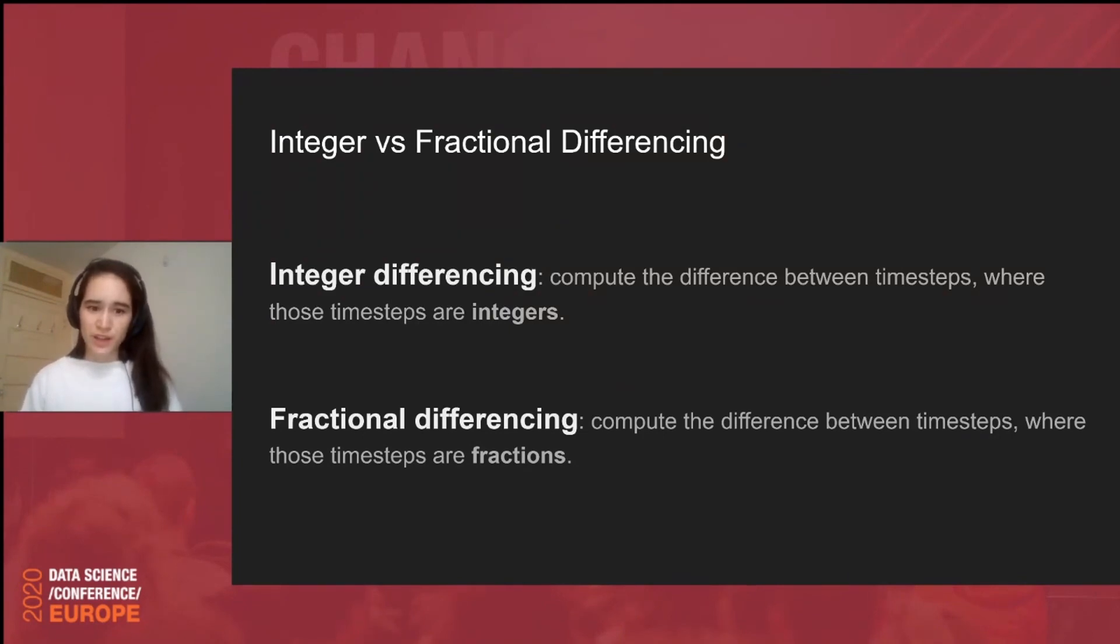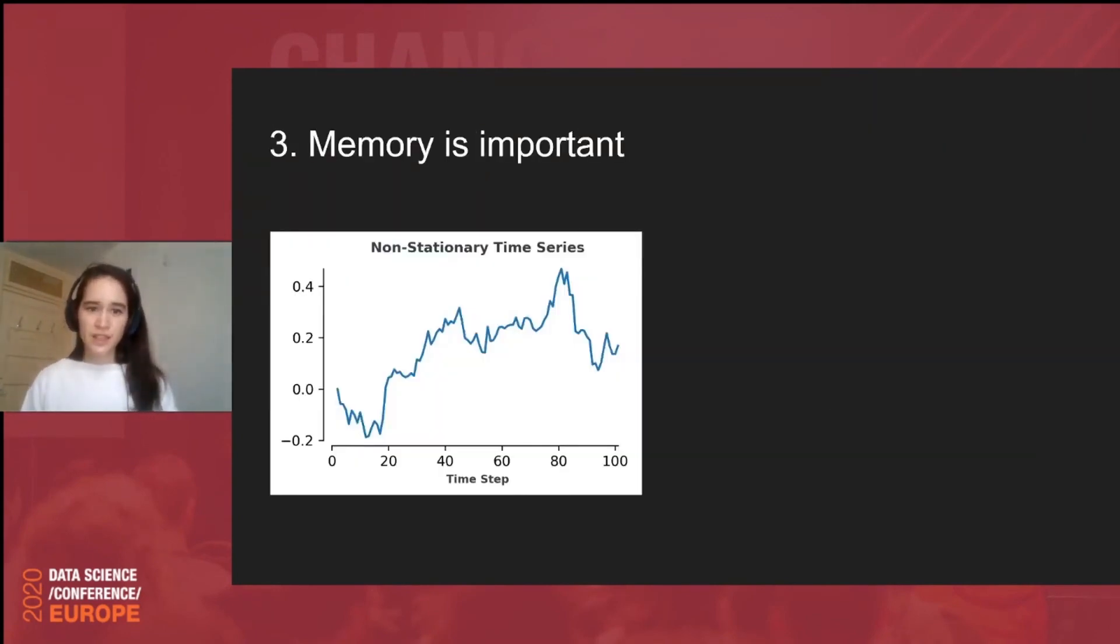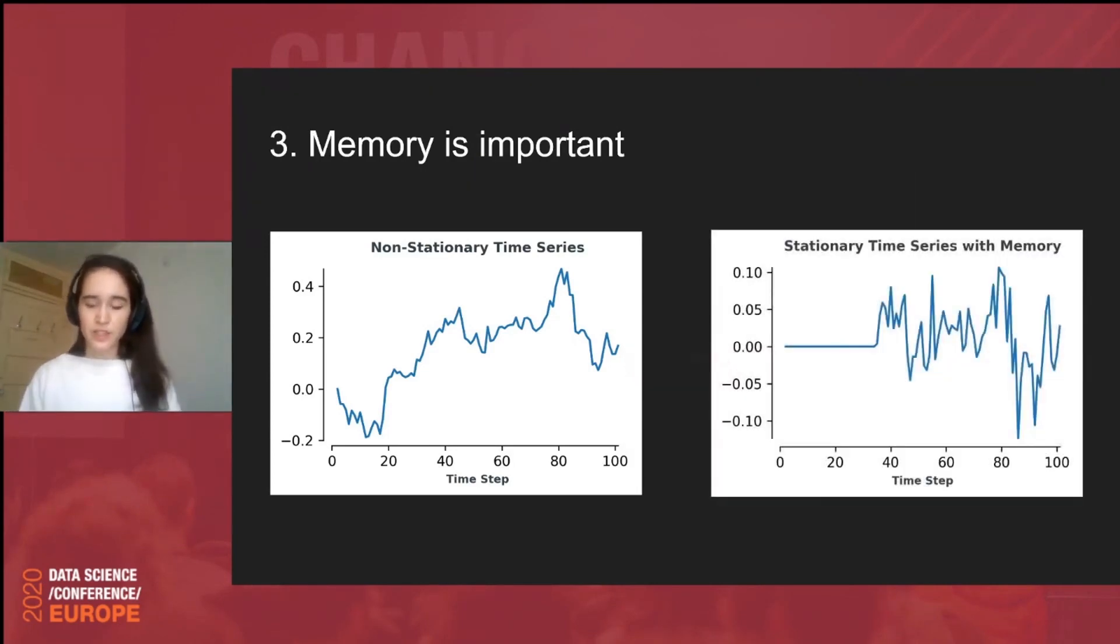Instead of subtracting yesterday's value, you would subtract something that is a bit smaller than yesterday's value. What you end up getting is a time series that is stationary according to statistical tests you might use to test for stationarity, but you still retain a bit of memory. So, you still have a bit of this predictive power in the time series. So, you can see an example of a fractionally differenced time series on the right-hand side of this slide.